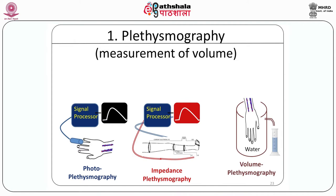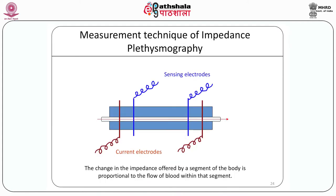The volume plethysmography by using water or air displacement is a standard teaching tool for students of physiology. The impedance plethysmography technique uses a very small, non-perceivable current and is entirely safe. This is injected into the body at a very high frequency in the range of 50 to 100 kHz. Blood is a very good conductor of current and is the only thing which is changing in the area. Thus, the change in impedance offered by a segment of the body is proportional to the flow of blood within that segment.